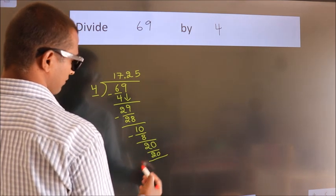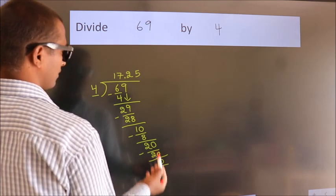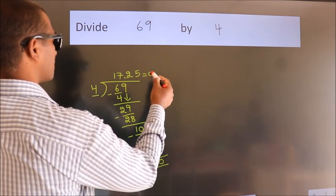Now, we subtract. We get 0. We got remainder 0. So, this is our quotient.